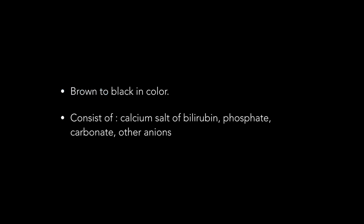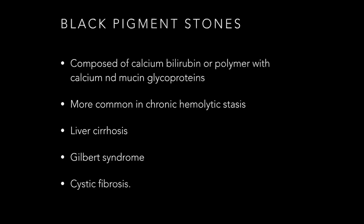Let's talk about what pigment stones are. Pigment stones are colored dark brown to black. They consist of calcium salts of bilirubin, phosphate, carbonate, and other anions. As discussed in our first lecture, there are two types of pigment stones: black type and brown type.